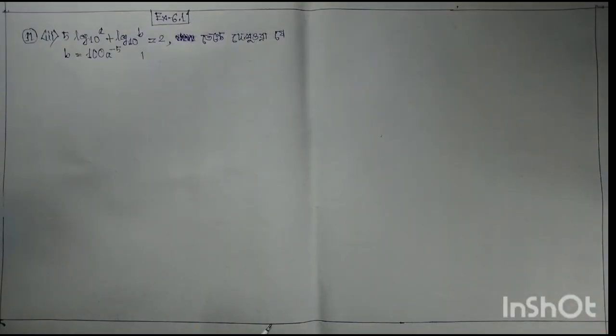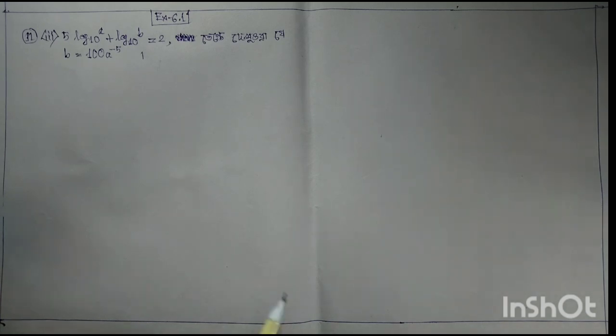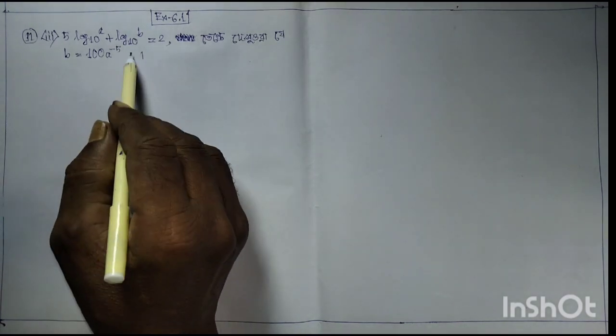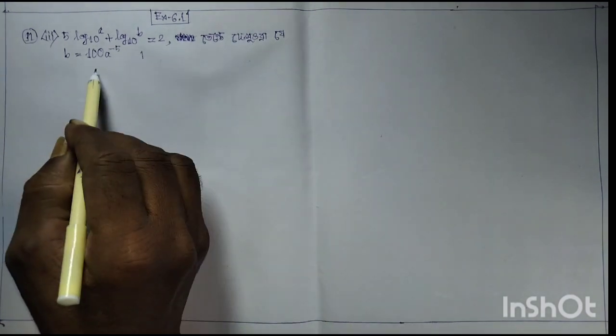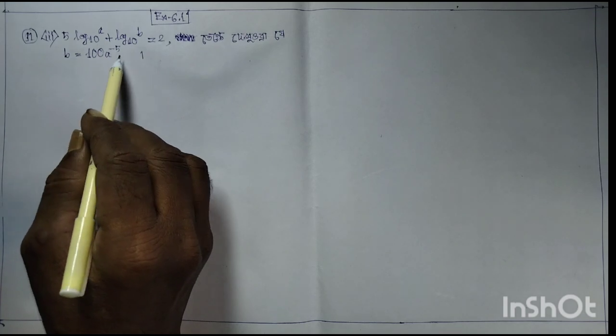Advanced analytics for Class 10, Chapter 9, Exercise 6.1, question number 11 — logarithm sector. Given: 5 log₁₀(a) + log₁₀(b) = 2, where b equals 100 and a equals minus 5.